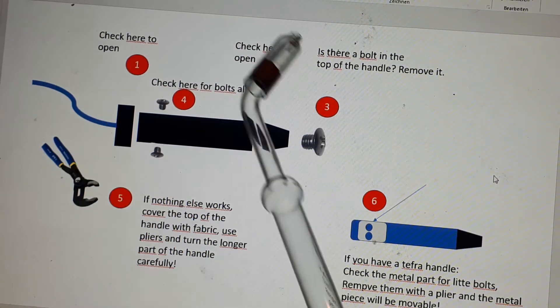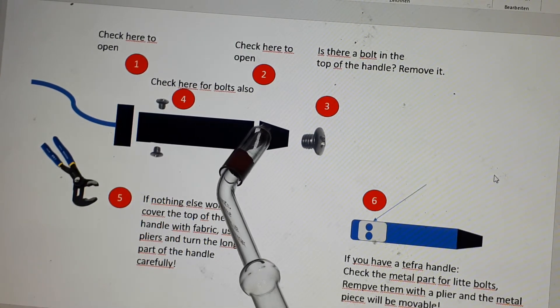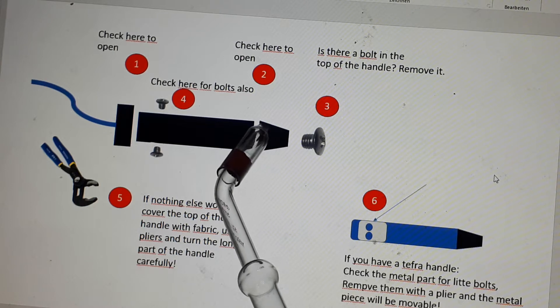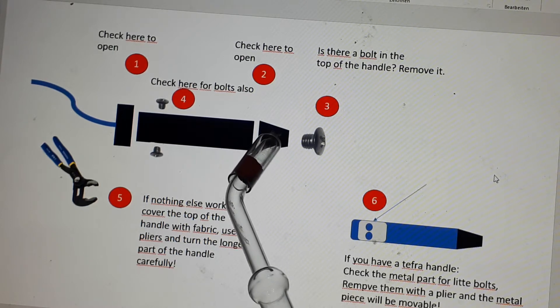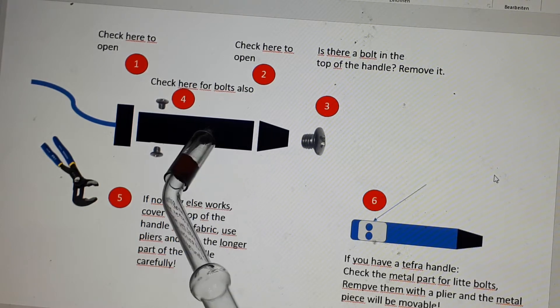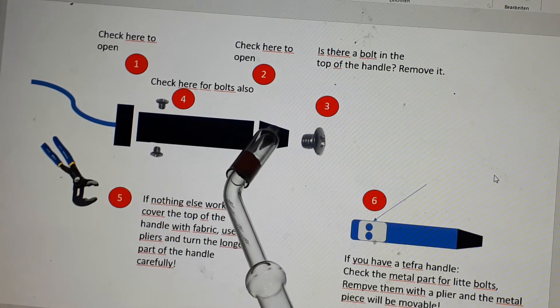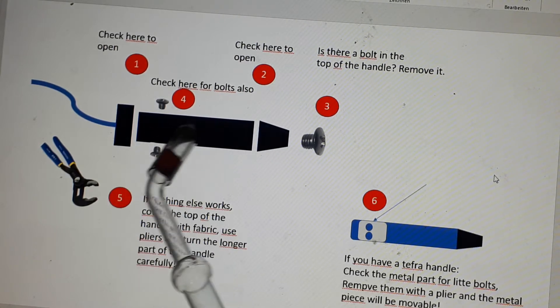If it does not open the handle, there possibly is the top part that is movable. So you try to turn this and see if it goes, if it is coming away from this middle piece of the handle.